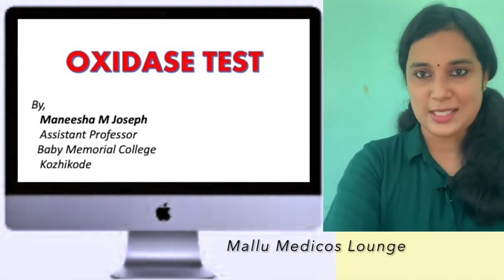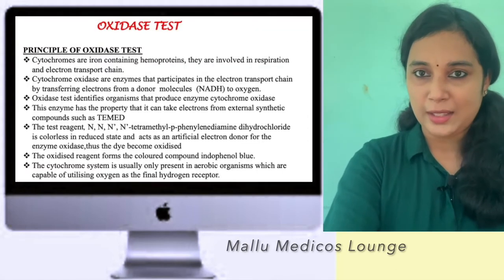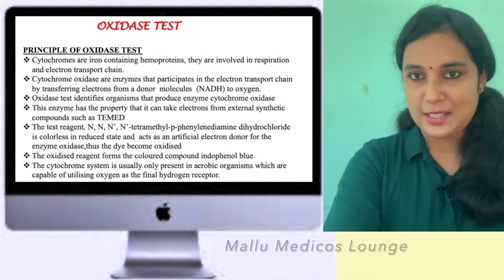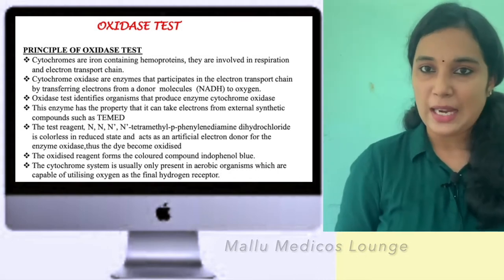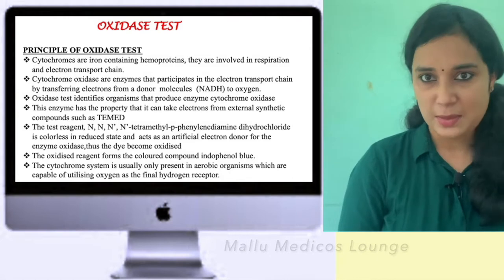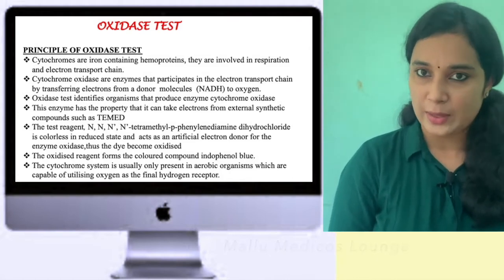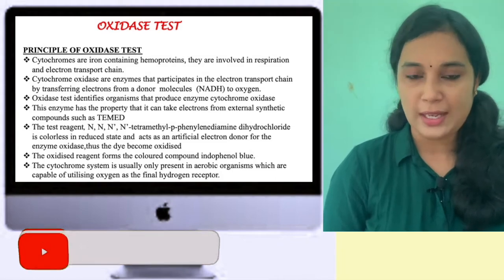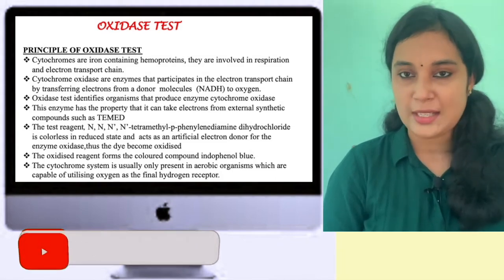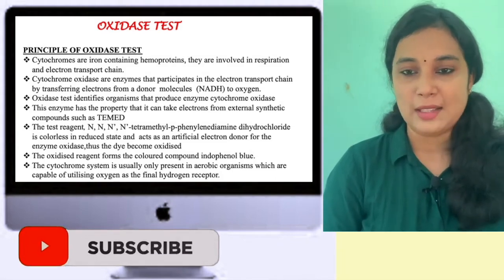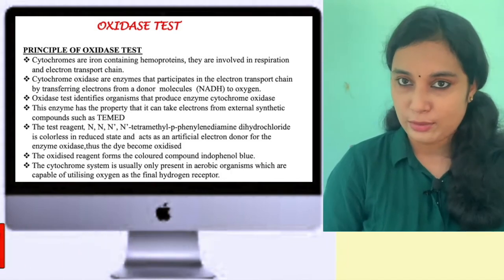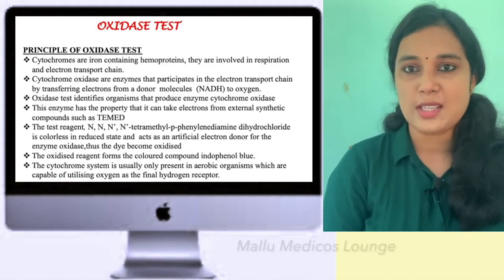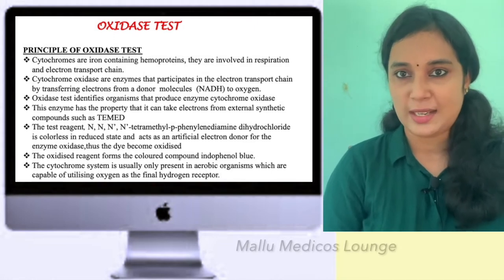What is the Oxidase Test? The principle is that bacteria have cytochrome systems. These are iron-containing hemoproteins involved in respiration, specifically in the electron transport chain. Bacteria have a system of hemoproteins and cytochromes.